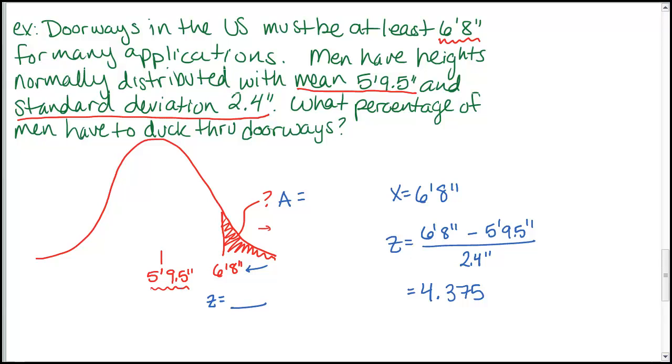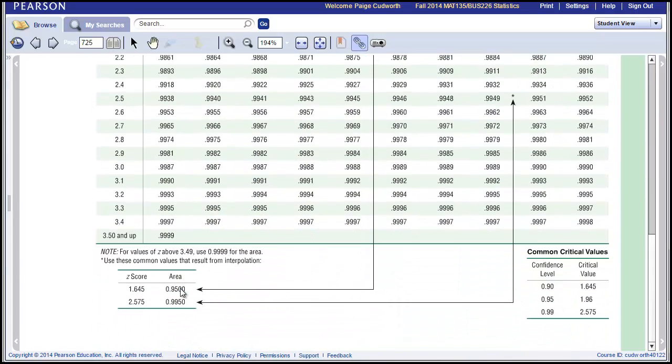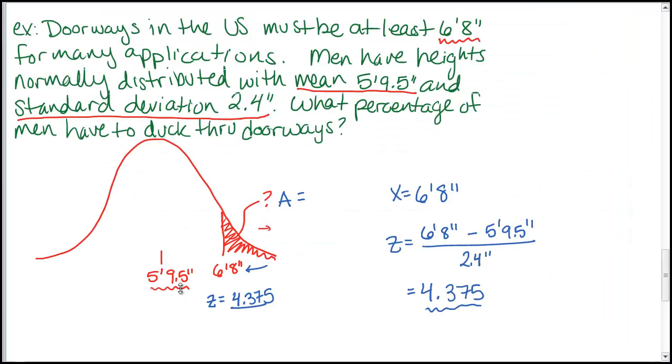You have to do this calculation fairly carefully because there's mixed units here. So you've got feet and inches. It's probably easier if you just convert everything to inches first so that everything is all just the same units. But when you compute this out, you get a z-score of 4.375. What this means is that 6 foot 8 inches would be more than 4 standard deviations above the mean. So again, this is really way further out towards the right. In fact, if you look at our z-score table, our positive z-scores only go up to 3.5.